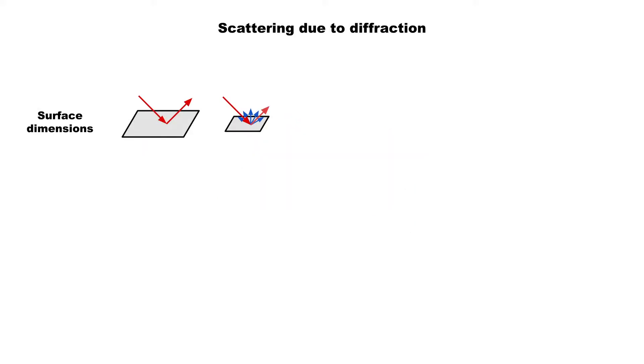One of them is the surface's dimensions, with smaller surfaces producing more overall scattering. Another is the distance from the point of incidence to the surface's edge, with incidence points closer to the edge producing more scattering.